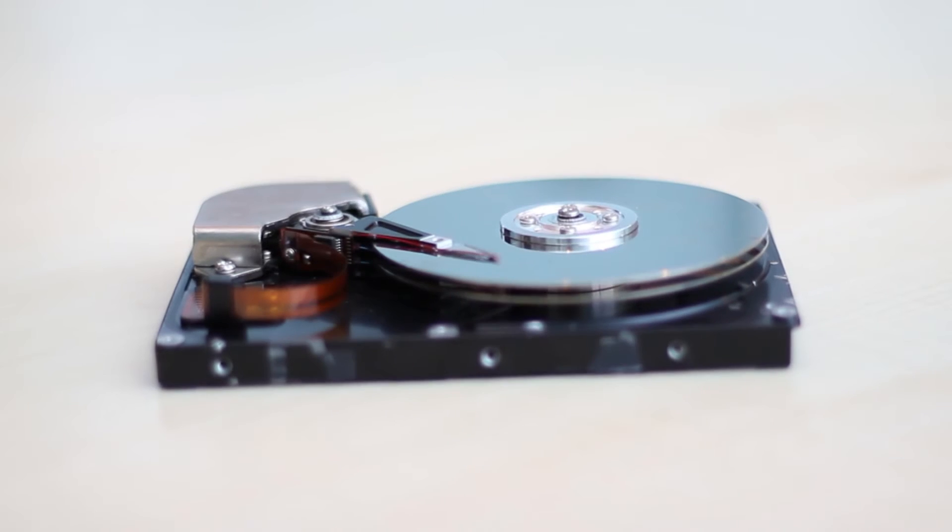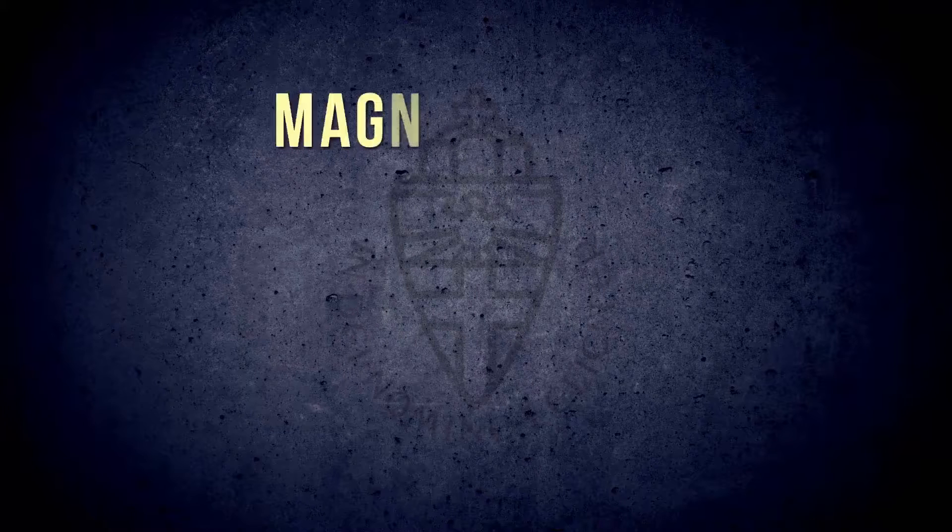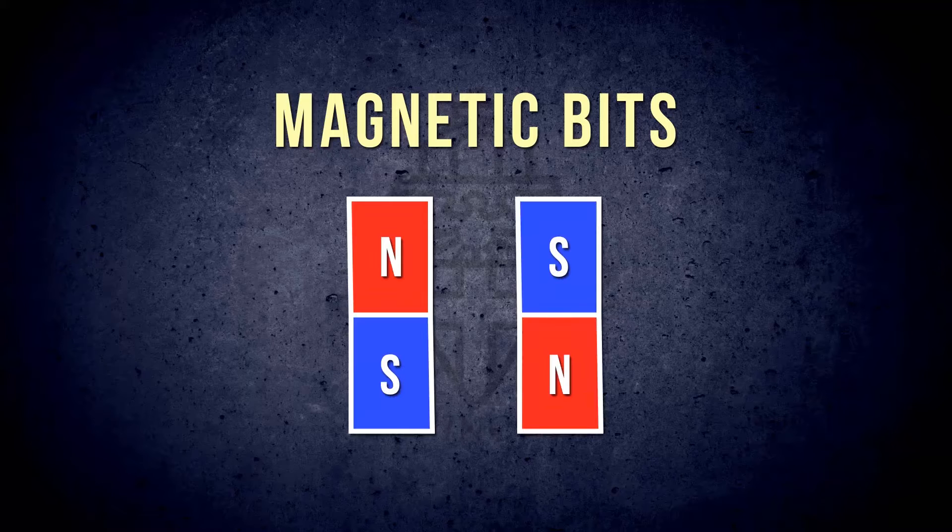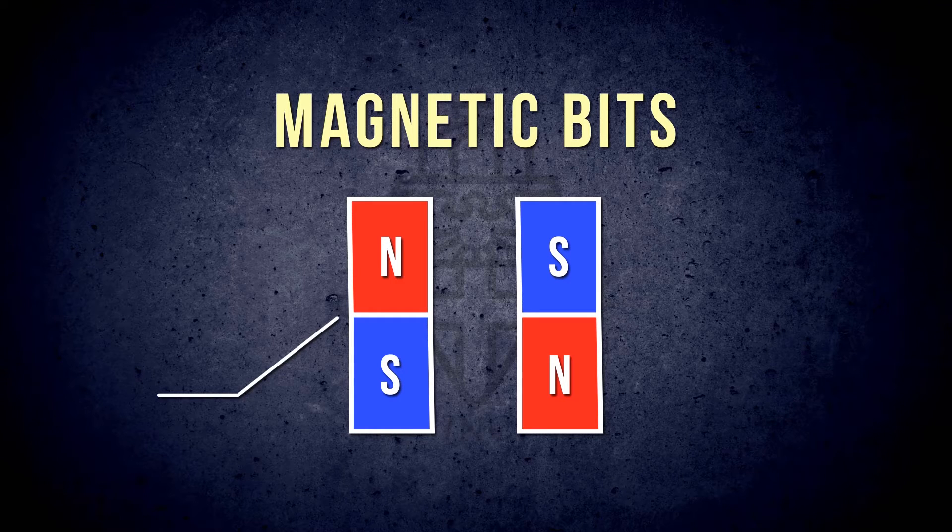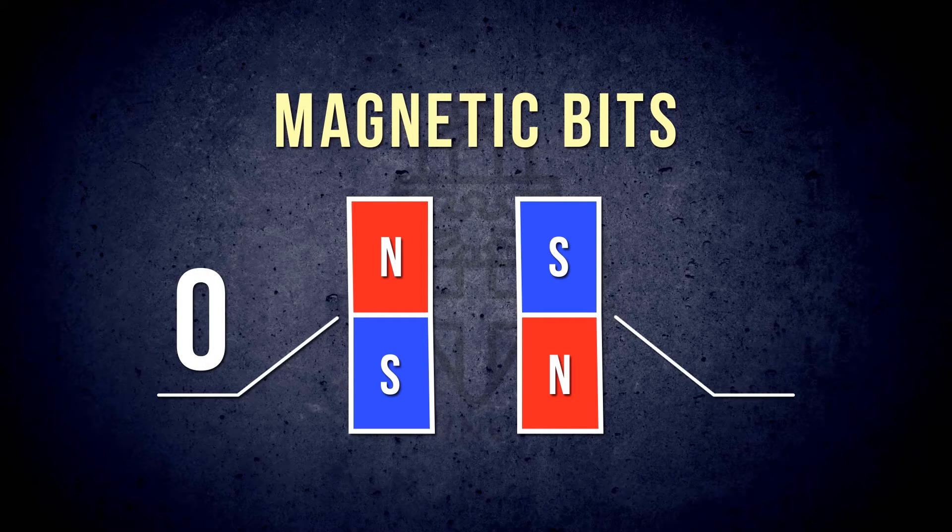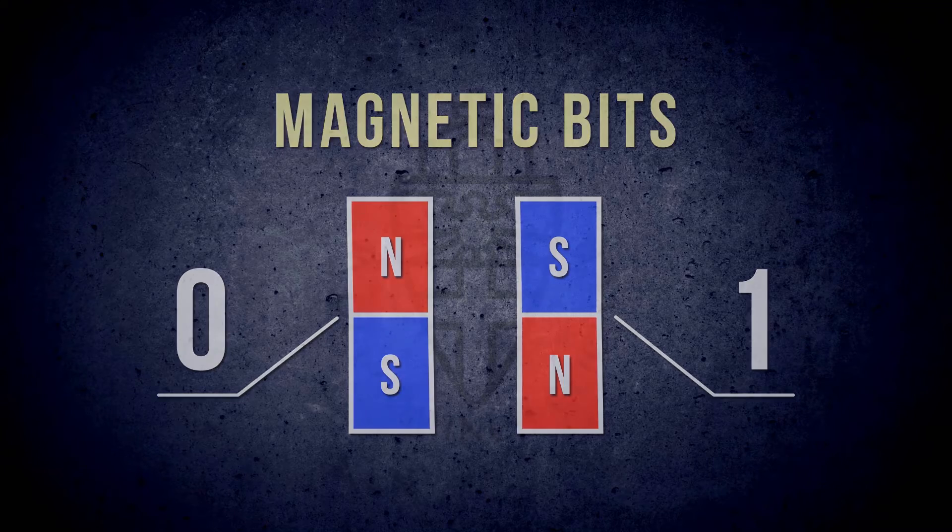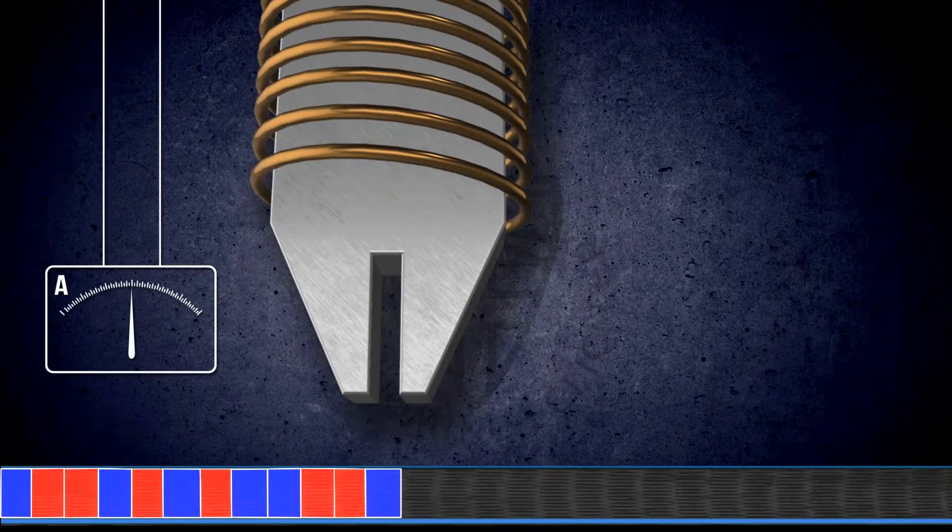If you look, for instance, at a hard disk drive, every magnetic bit there is represented by a magnet. If the north pole of the magnet points up, the bit stores zero. If it points down, the bit contains one. If you want to record a bit, we have to reverse the magnetization of the magnet.